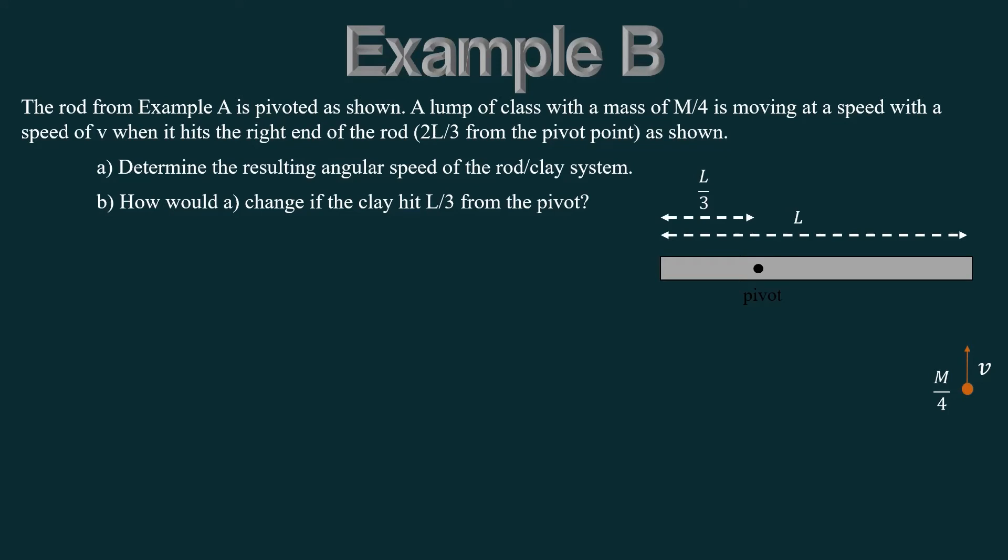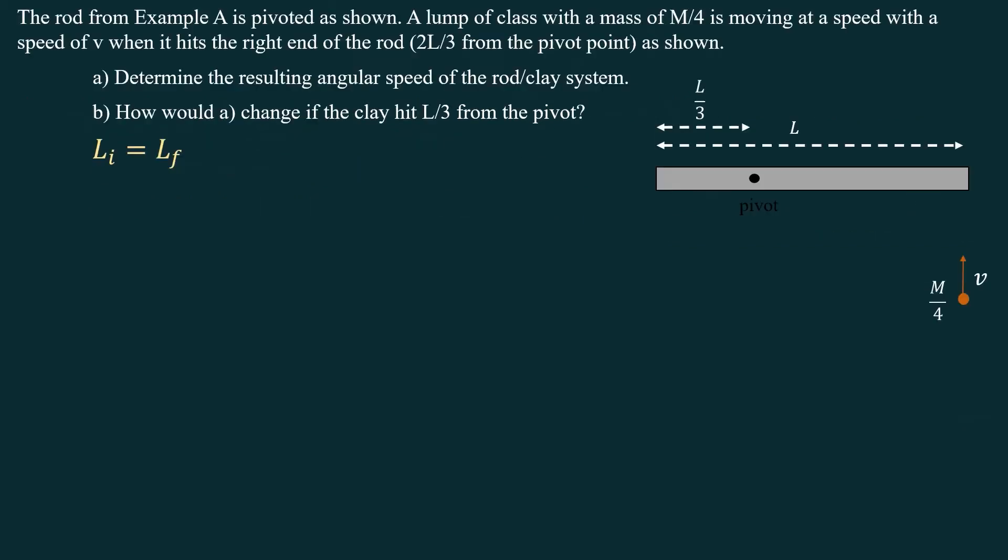Example B goes back to the rod from example A, except for this time it's pivoted at the same place, but it's going to be hit by a thing of clay with a mass of M over 4. So one fourth of the mass of the rod. It's going to hit it right here at the end of the rod, and it's going to stick to the rod. So this is a case where we have an angular collision. This is going to be linear angular momentum, so MVR, being converted to when the clay hits the rod, it sticks to the rod, so it becomes part of the rod system. Then we have it spinning, so that's going to be I omega.